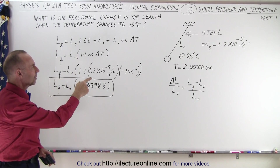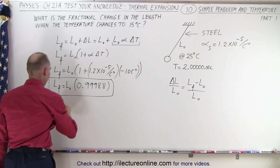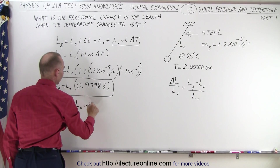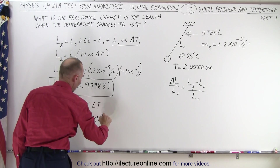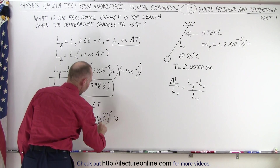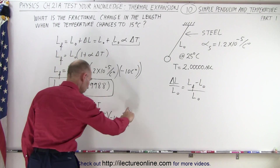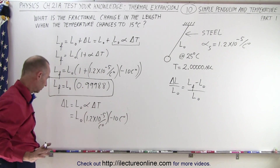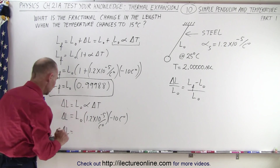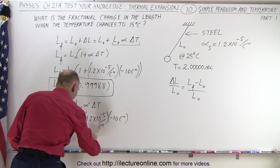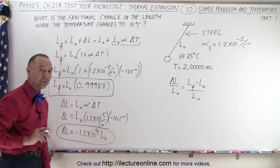Now we also need a relationship between the change in the length and the original length. We can say that delta L is equal to L_initial times alpha times delta T. So in this case that's L_initial times 1.2 times 10 to the minus 5 times negative 10 — this is per centigrade degree and this is centigrade degrees, so the centigrade degrees cancel out. So delta L is equal to negative 1.2 times 10 to the minus 4 times L_initial.